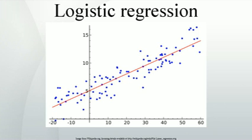Logistic regression is used to predict the odds of being a case based on the values of the independent variables, or predictors. The odds are defined as the probability that a particular outcome is a case divided by the probability that it is not a case. Like other forms of regression analysis, logistic regression makes use of one or more predictive variables that may be either continuous or categorical data. Unlike ordinary linear regression, however, logistic regression is used for predicting binary outcomes of the dependent variable, treating the dependent variable as the outcome of a Bernoulli trial, rather than continuous outcomes. Given this difference, it is necessary that logistic regression take the natural logarithm of the odds of the dependent variable being a case — referred to as the logit or log odds — to create a continuous criterion as a transformed version of the dependent variable. Thus the logit transformation is referred to as the link function in logistic regression; although the dependent variable in logistic regression is binomial, the logit is the continuous criterion upon which linear regression is conducted.